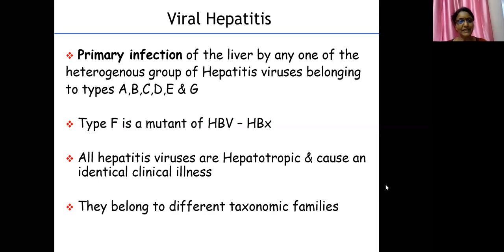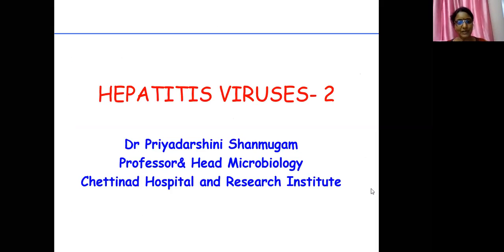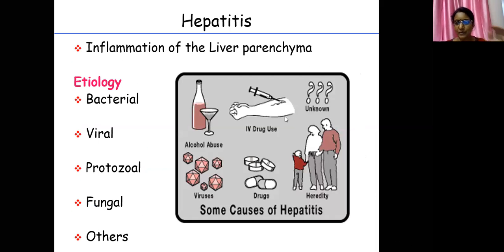We told that B is quite a large topic, so I want to take it separately. Today's class we will be discussing about hepatitis viruses, mainly B in particular. But before that, I just want to recollect a few points. We already know that hepatitis is inflammation of the liver parenchyma, and there can be many causes for it.